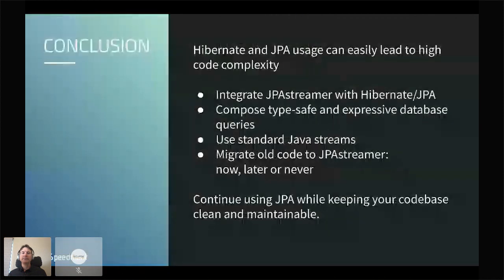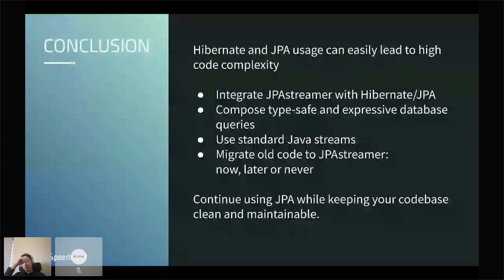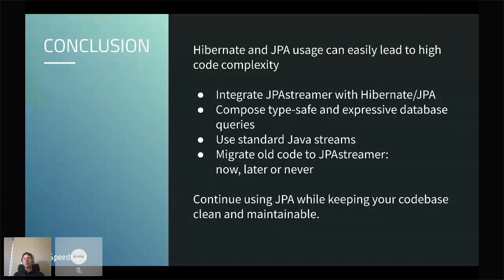Using Hibernate and JPA can easily lead to high code complexity — all these builders or mixing SQL with Java. JPA Streamer integrates with JPA to let you compose type-safe, expressive database queries using standard Java streams. You don't have to learn a new API. You can migrate old code to JPA Streamer now, later, or never — JPA Streamer can coexist with existing code. You can use it in one place while everything else runs as before. That's a good property of a library.